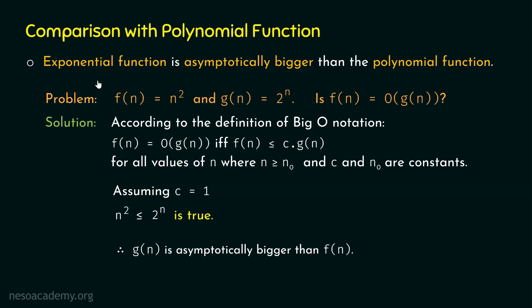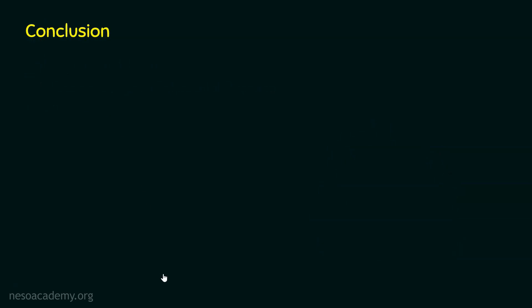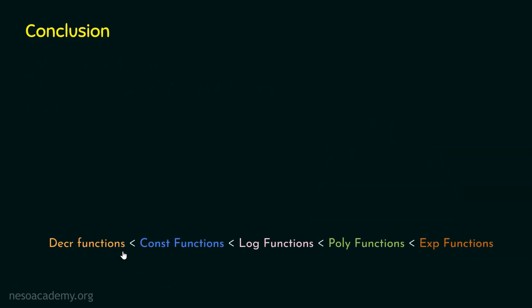Now we are done with the comparison of the exponential function with the polynomial function. Here is the final conclusion: decrement functions are asymptotically less than constant functions; constant functions are asymptotically less than logarithmic functions; logarithmic functions are asymptotically less than polynomial functions; and polynomial functions are asymptotically less than exponential functions. Now here comes the graphical representation of these functions.